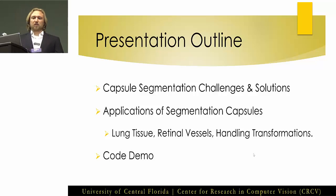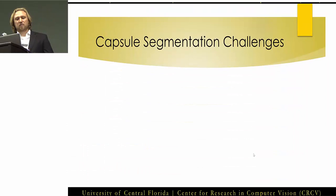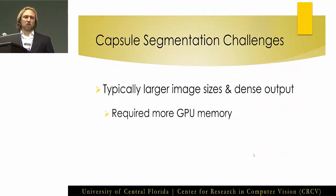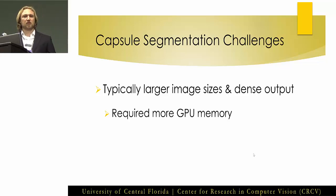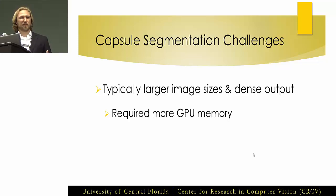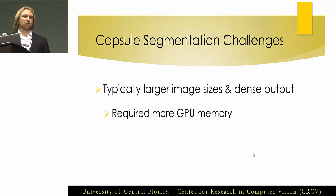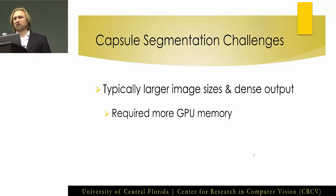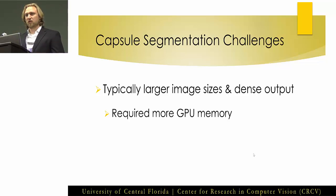Some interesting challenges we deal with in segmentation is we typically have larger image sizes — we don't try to perform segmentation on 28 by 28 pixel images. We're typically dealing with much larger image sizes, and we similarly have a dense output size. Typically we want classifications at every pixel location, or at worst something like a stride 4 that we then upsample. So we have a dense input, dense output, and that makes it very challenging to fit into memory compared to classification.